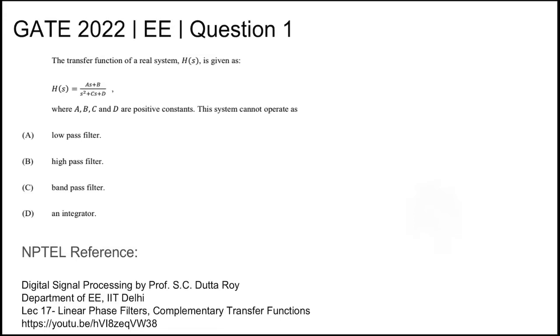This is GATE 2022 Electrical Engineering Question Number 1. The transfer function of a real system H(s) is given by (As + B) divided by (s² + Cs + D), where A, B, C, and D are positive constants. The system cannot operate as: low pass filter, high pass filter, band pass filter, or integrator.